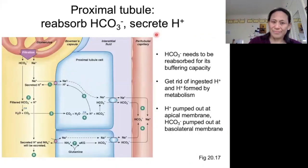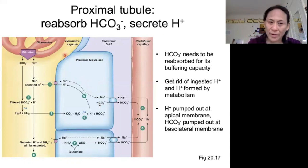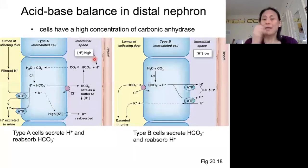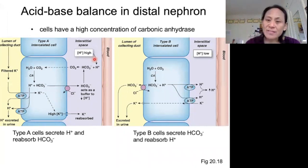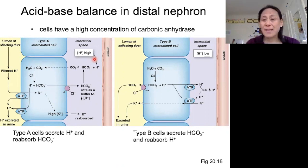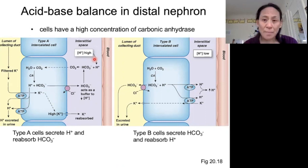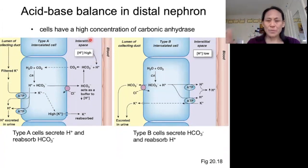The processes that happen in the proximal tubule are automatic — they're not regulated. This is just what is automatically happening in the proximal tubule under all circumstances. But when we get to the distal nephron — the distal tubule and the collecting duct — we are going to adjust our acid-base activities based on our body's current needs at that specific time. If our body is getting too acidic, we're going to want to secrete acid; if our body is getting too basic, we're going to want to reabsorb acid, and adjust bicarbonate secretion and reabsorption respectively.